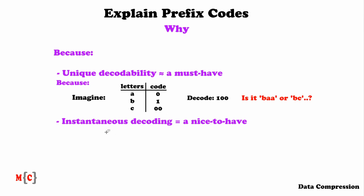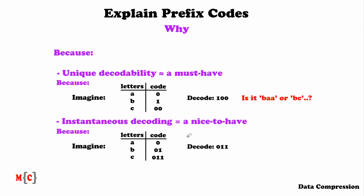Moving on to instantaneous decoding, which is nice to have — so it's not a must-have. Here we have the code for A: 0; B: 01; C: 011. Now we have to decode the string 0, 1, 1. If you want to think about this, please pause the video. We will start from the left, from the 0.